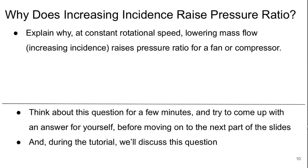But why? Why does increasing incidence onto the rotor blades raise the pressure ratio? So I want you to try to think about this and explain why at a constant rotational speed, lowering the mass flow which increases the incidence raises the pressure ratio for a fan or a compressor.